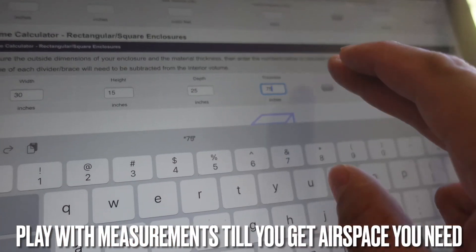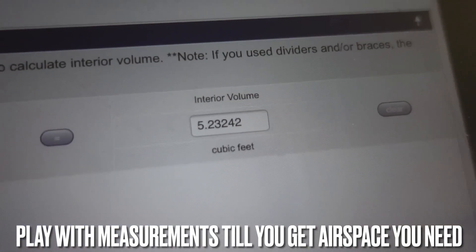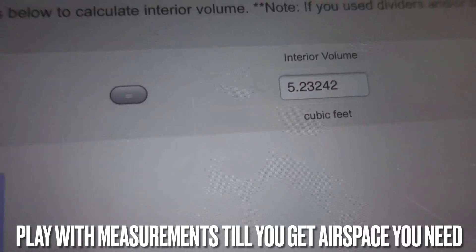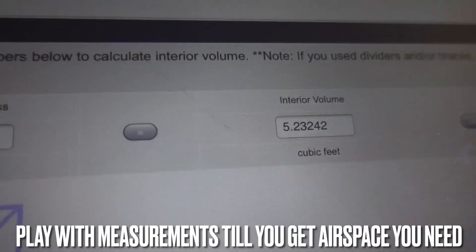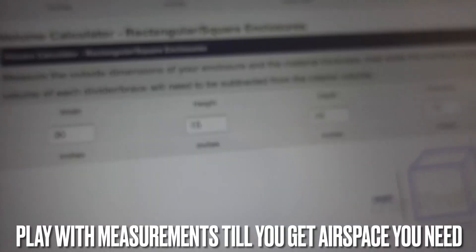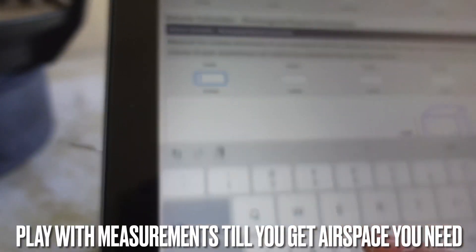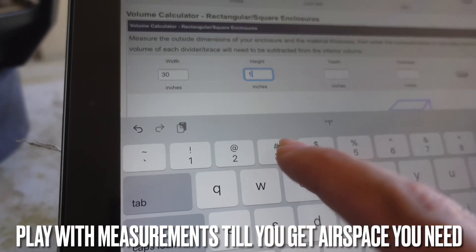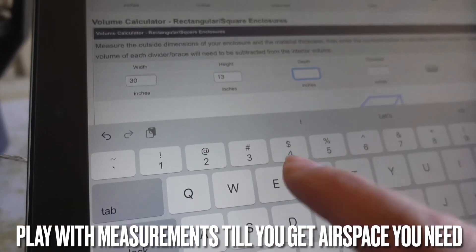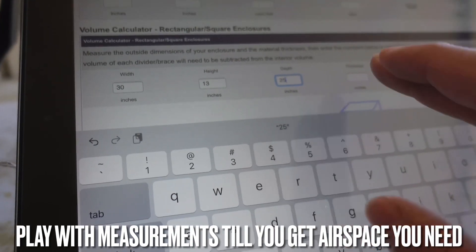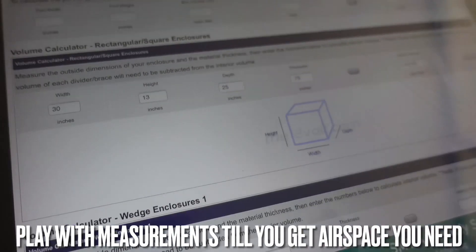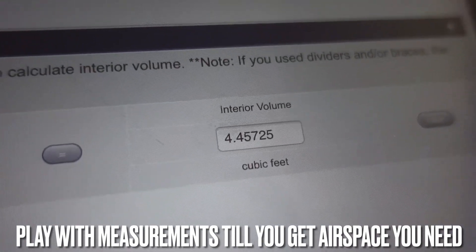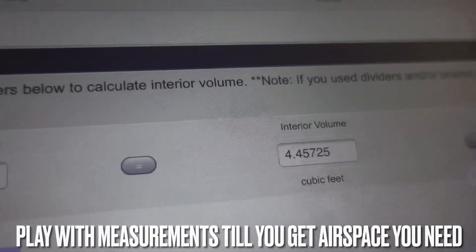Height we're going to drop it. Let's do 15 height and 25 depth, thickness 0.75, which equals 5.23. We're getting somewhere. Now we just need to shrink it down a hair with the height. Let's do 30 width, 13 height, 25.75 depth. That's actually a pretty good number right there, 4.45. That would be excellent.